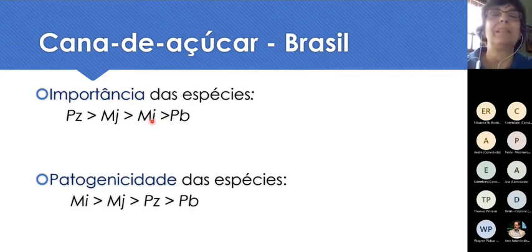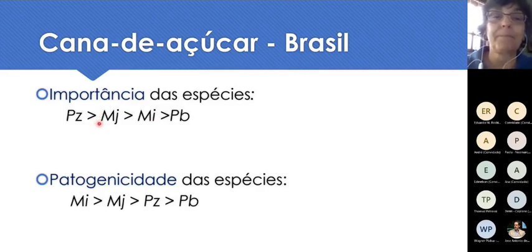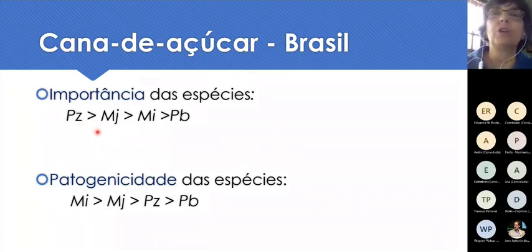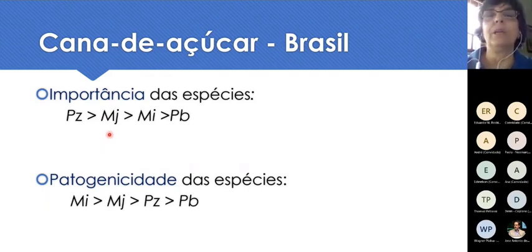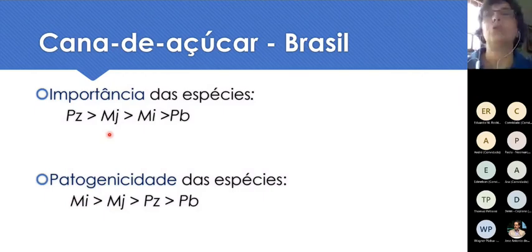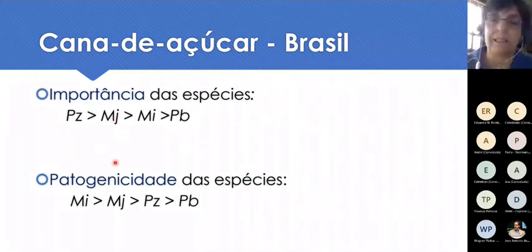Em cana, como é uma poácea, uma gramínea, é muito mais frequente encontrar população numericamente grande de Pratylenchus do que uma numericamente pequena de incognita. Então, Pratylenchus é uma espécie muito comum e, normalmente, quando temos problema numa área, com muita frequência, é Pratylenchus. Eu gosto de colocar isso para as pessoas não desconsiderarem Pratylenchus. Não é raro ir até um produtor e encontrar Meloidogyne. Nós temos que tratar quando temos populações acima do nível de controle, ou para o conjunto das espécies.